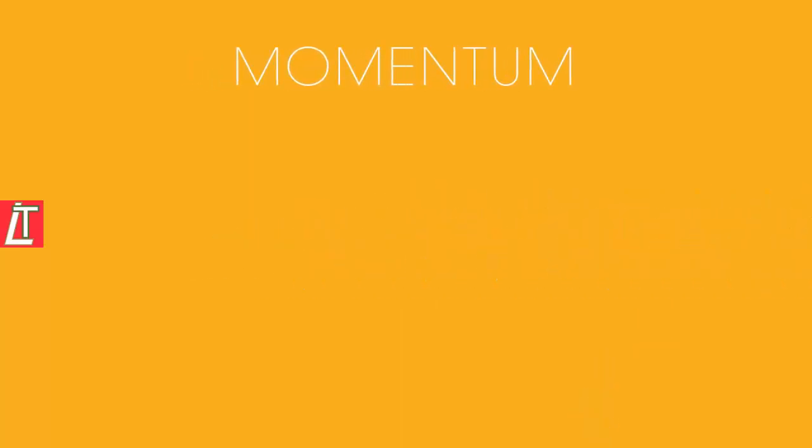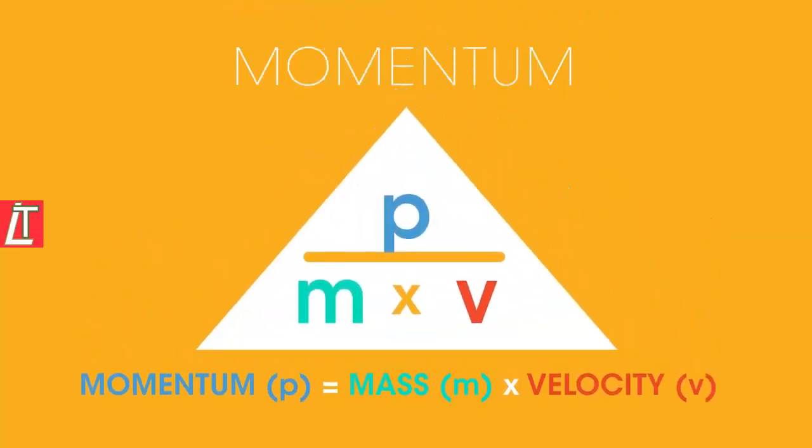We calculate momentum using this equation. Momentum p equals mass m times velocity v. This can also be displayed in a formula triangle like this. So mass equals momentum over velocity, and velocity equals momentum over mass.